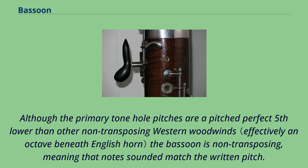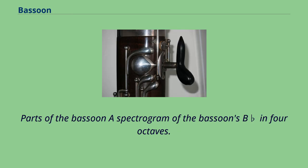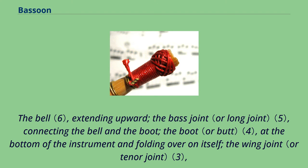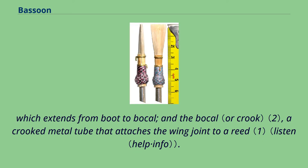The bassoon disassembles into six main pieces, including the reed: the bell, extending upward; the bass joint, connecting the bell and the boot; the boot, at the bottom of the instrument and folding over on itself; the wing joint, which extends from boot to bocal; and the bocal, a crooked metal tube that attaches the wing joint to a reed.